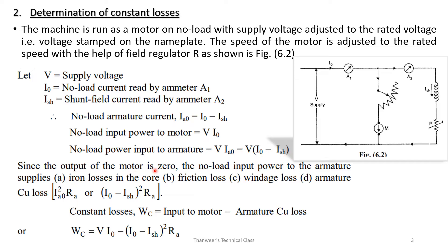Since the output of the motor is zero, the no-load input power to the armature supplies the iron losses in the core, friction losses, windage losses, and armature copper loss.